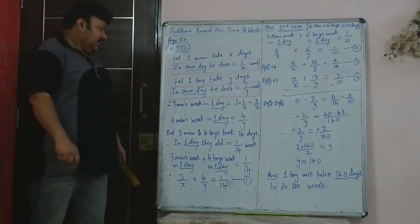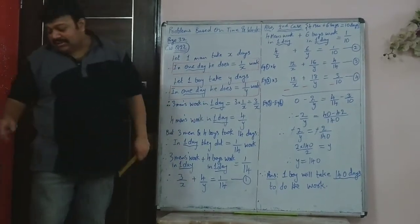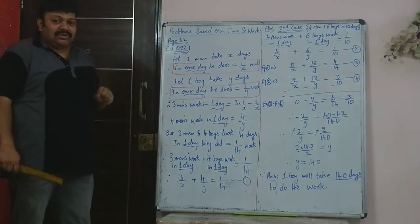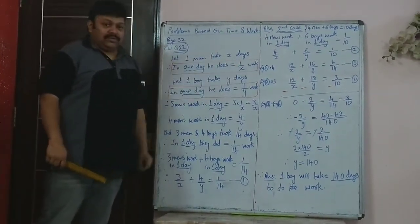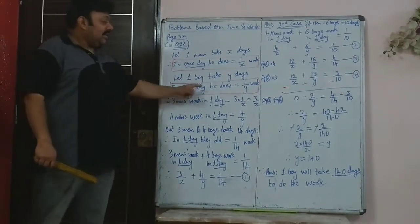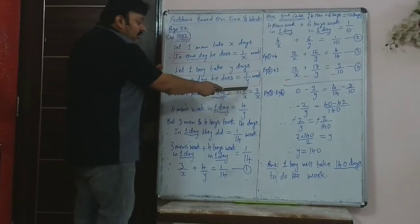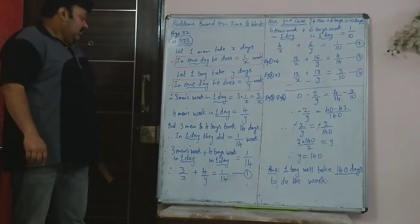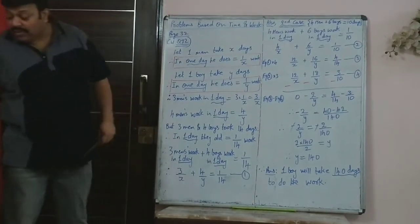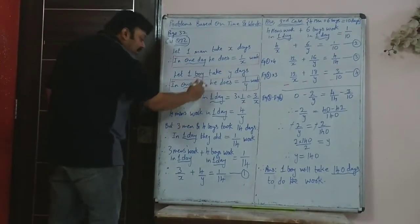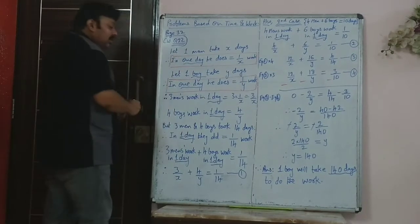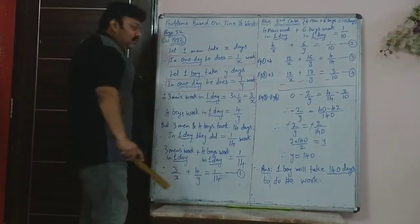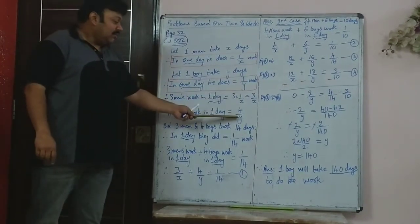Since 3 men and 4 boys together take 14 days, in one day they do 1/14 of the total work. So the first equation is: 3/x plus 4/y equals 1/14. For the second condition, 4 men and 6 boys take 10 days, so in one day they do 1/10. Four men's work in one day is 4/x and six boys' work in one day is 6/y, giving: 4/x plus 6/y equals 1/10.